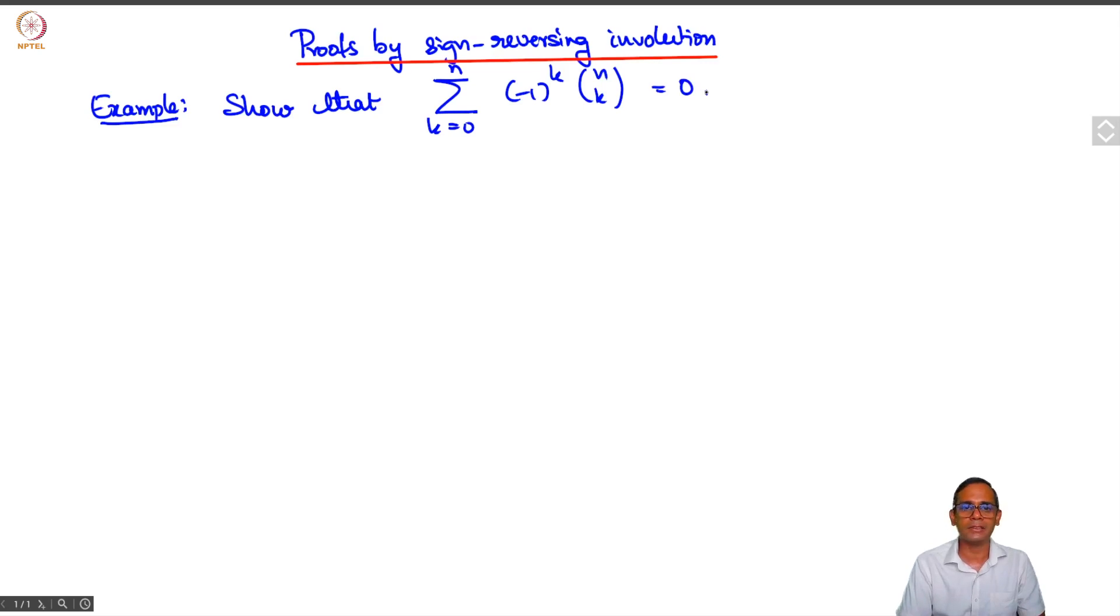Of course, this is also the binomial expansion of 1 minus 1. But just to illustrate this technique, let me give you a proof using sign reversing involutions. This inequality is equivalent to showing that the sum over all subsets of n, minus 1 raised to the cardinality of s, is 0. Because the number of subsets of n of cardinality k is exactly n choose k.